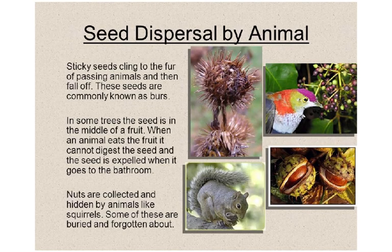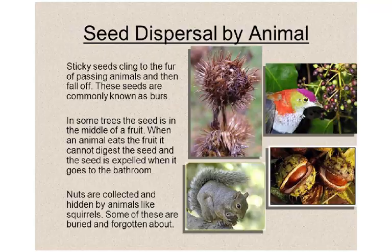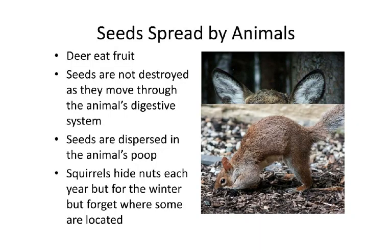To summarize animal dispersal: sticky seeds cling to fur of passing animals and fall off. In some trees the seed is inside a fruit - when an animal eats the fruit it cannot digest the seed, which is expelled in droppings. Nuts are collected and hidden by animals like squirrels, some are buried and forgotten about. Deer eat fruit but seeds pass through their digestive system intact and are dispersed in their droppings.